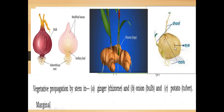Here you can see potato. Potato consists of eyes, and the tuber part of the potato will develop into a new plant. This is an example of vegetative propagation by stem.